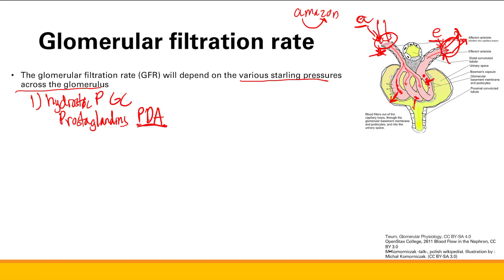What does that do to hydrostatic pressure and filtration overall? Dilating the afferent arteriole increases hydrostatic pressure, and then you're going to increase GFR — glomerular filtration rate.